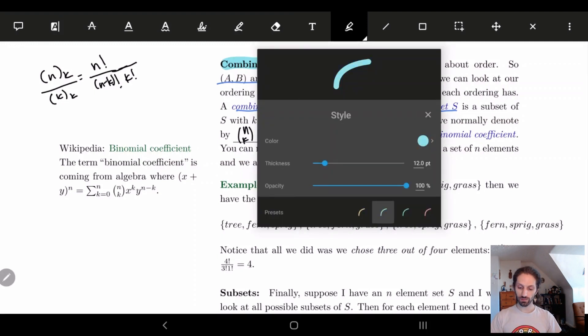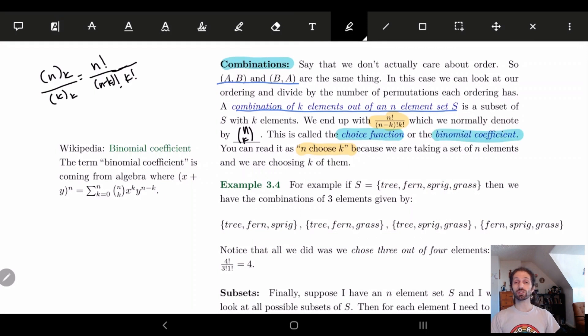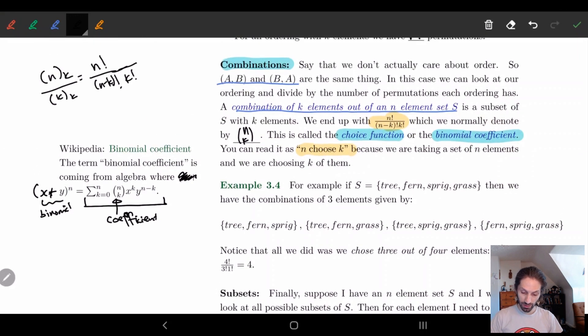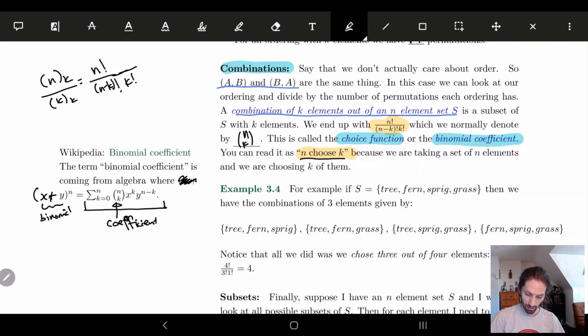And so the reason why there's two different ways of calling this. We can either call it the choice function and this is coming from the terminology n choose k, this is how we read it out loud. But that's from a combinatorial perspective. A lot of times this is called the binomial coefficient which is where it's used a lot. And this is actually coming from, if we have (x + y) to the n this is just going to be equal to this. And the coefficient here is the binomial coefficient.